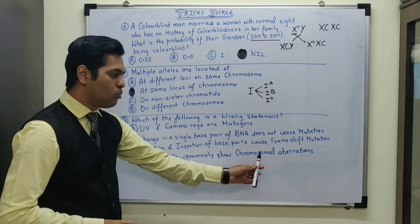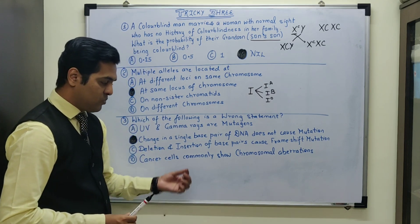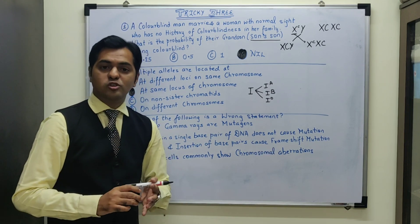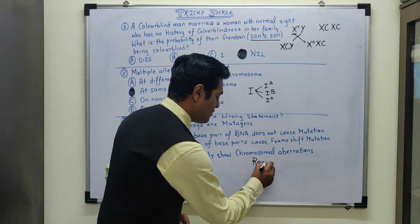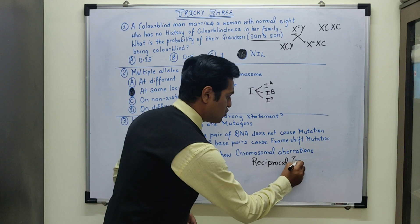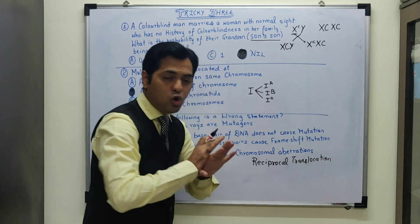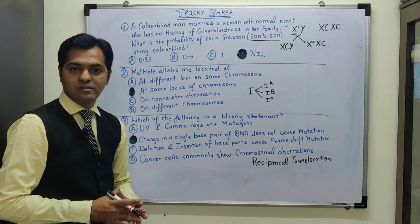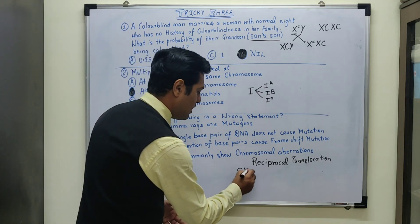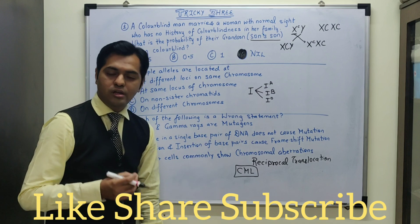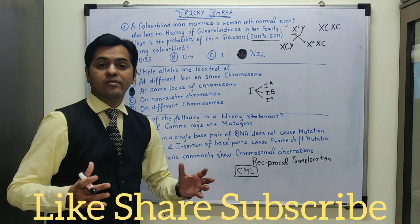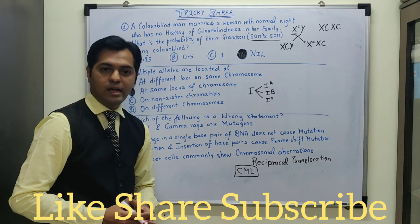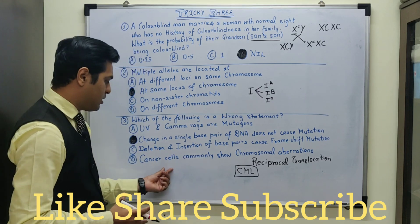Cancer cells commonly show chromosomal aberrations, again this statement is correct. Now chromosomal aberrations wherein there is change in the structure of chromosome, specifically reciprocal translocation wherein the exchange of genes occurs between two totally different chromosomes that is known as reciprocal translocation, which can result in cancerous formation. One example is CML, chronic myelogenic leukemia, which is a type of blood cancer wherein the exchange occurs between chromosome number 9 and 22, and that results in this blood cancer. So this statement is also correct.